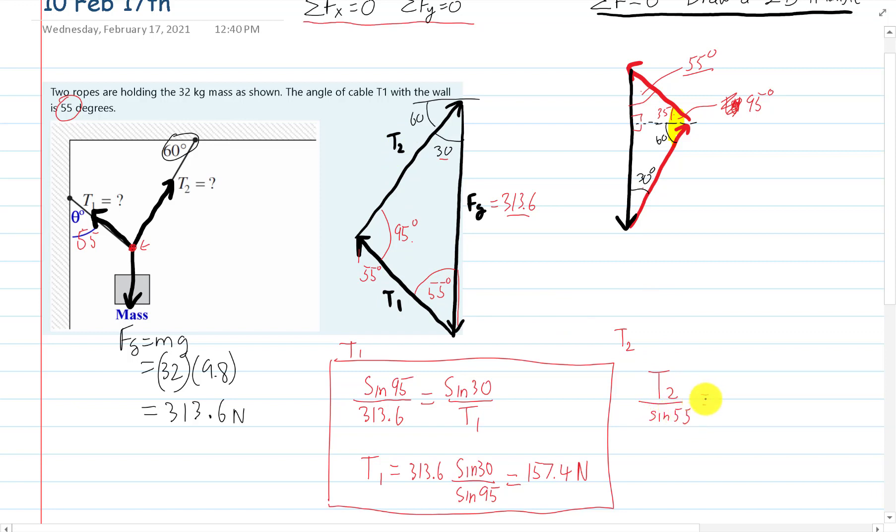Is equal to the two givens that we have here: 313.6 all over the sine of 95. T2 and this angle relating those two, and relating these two.